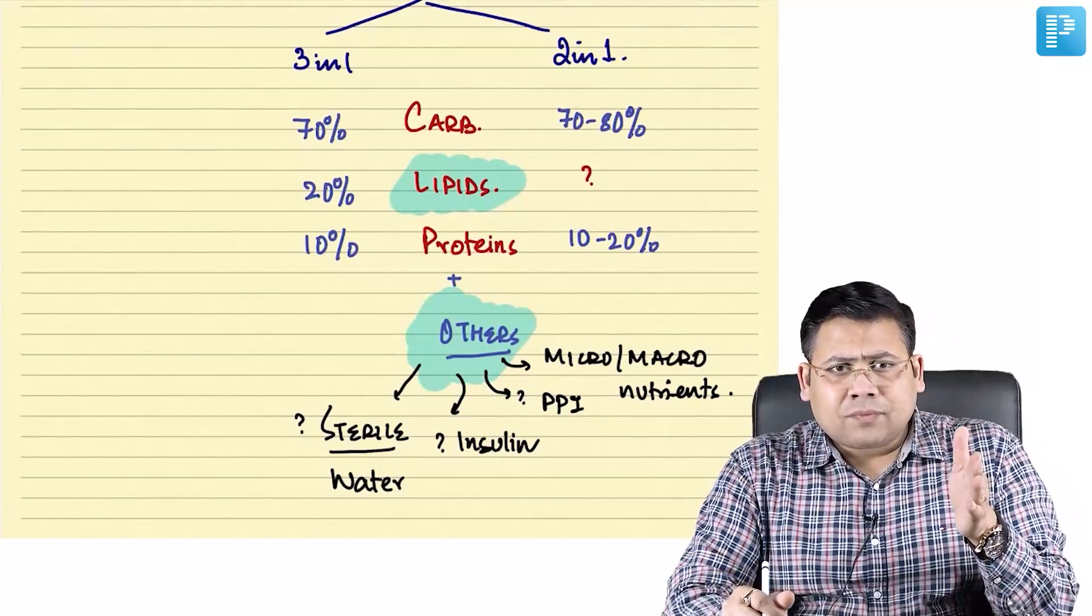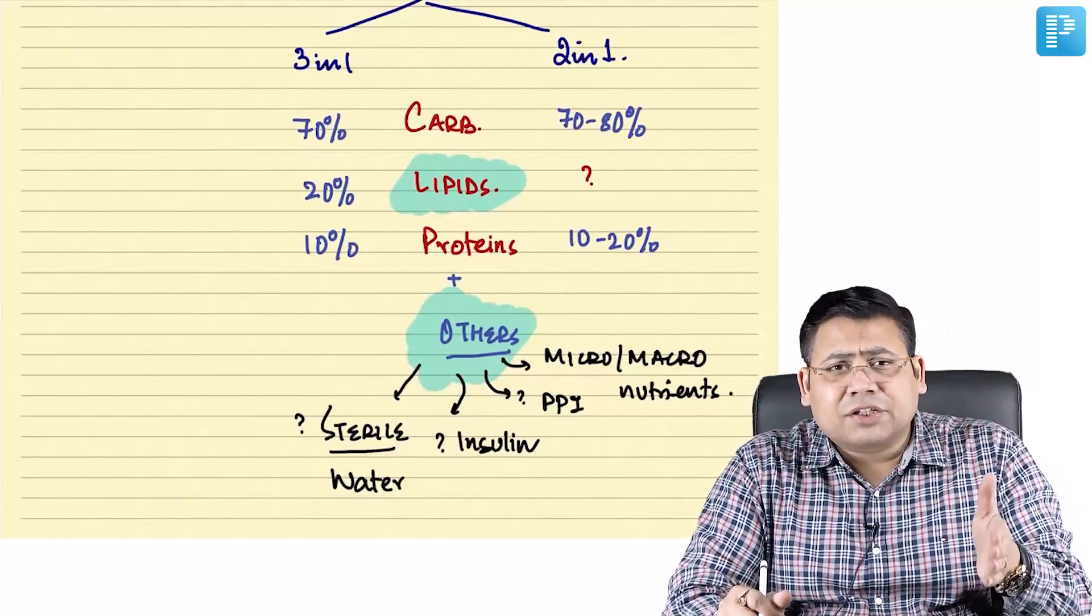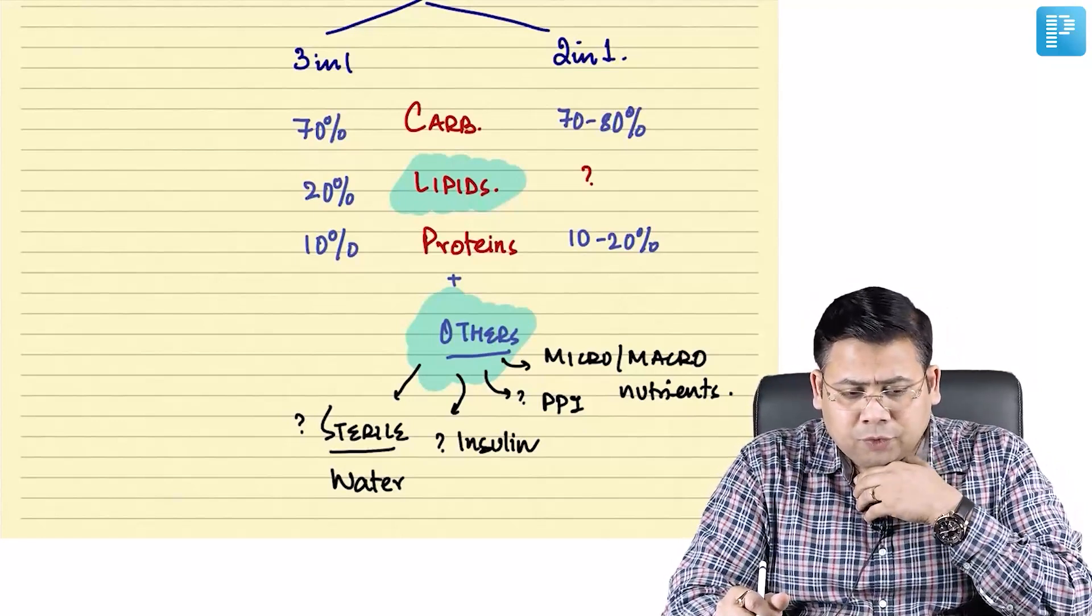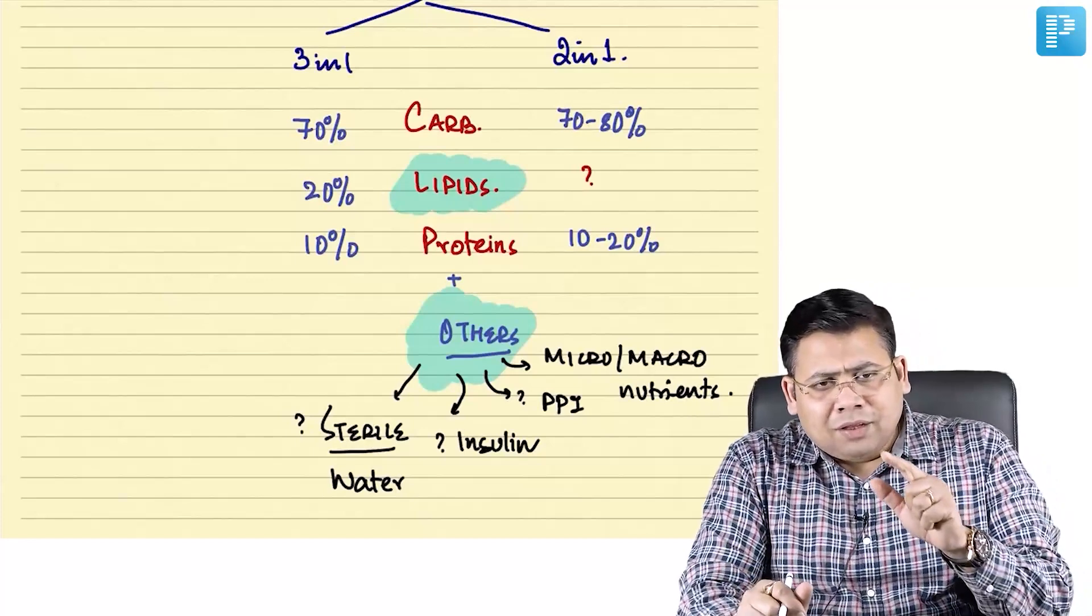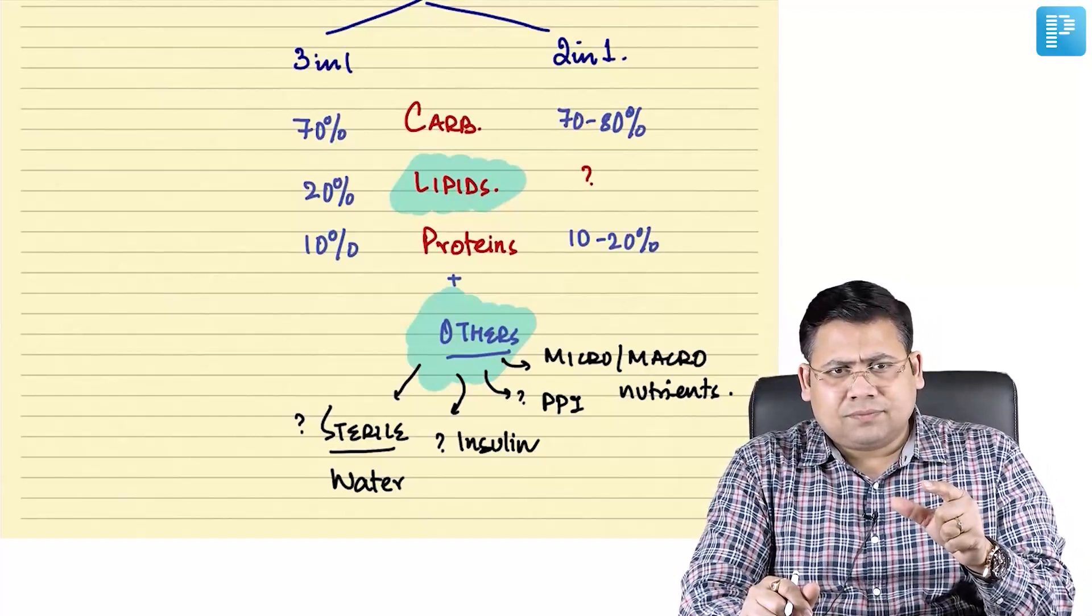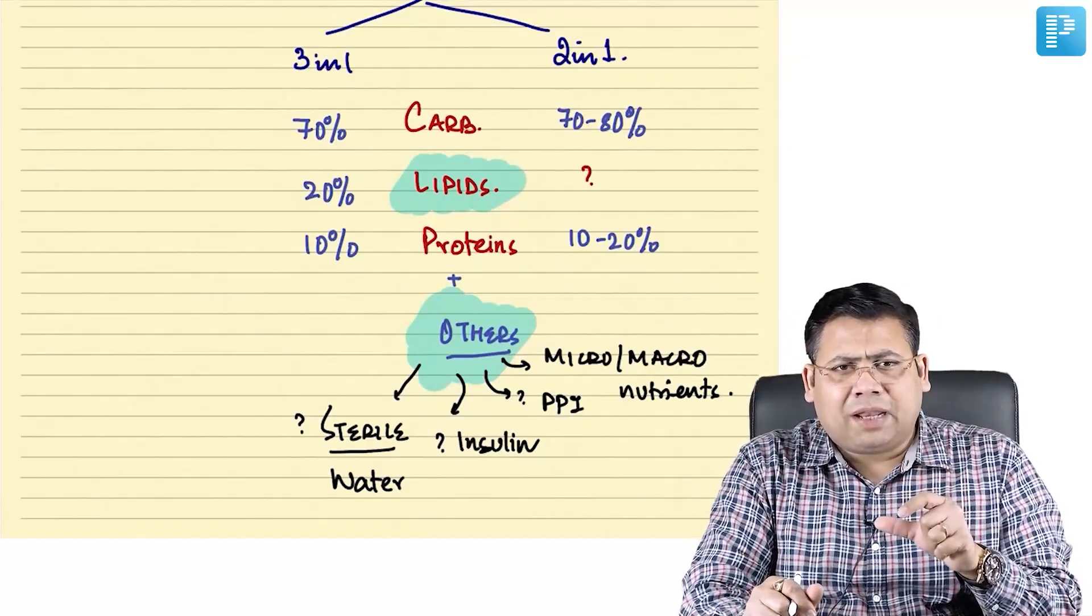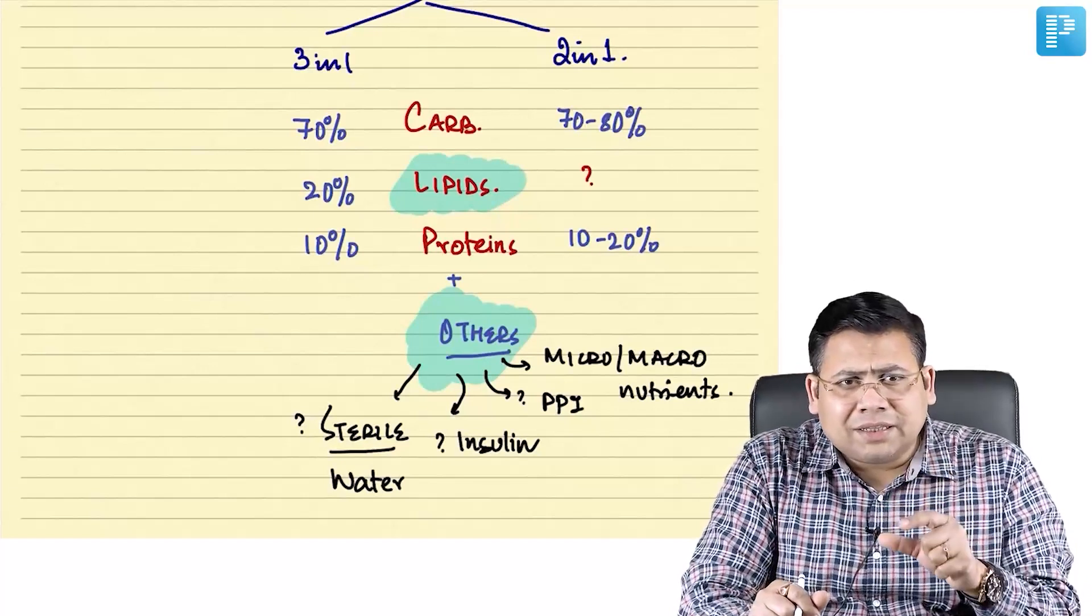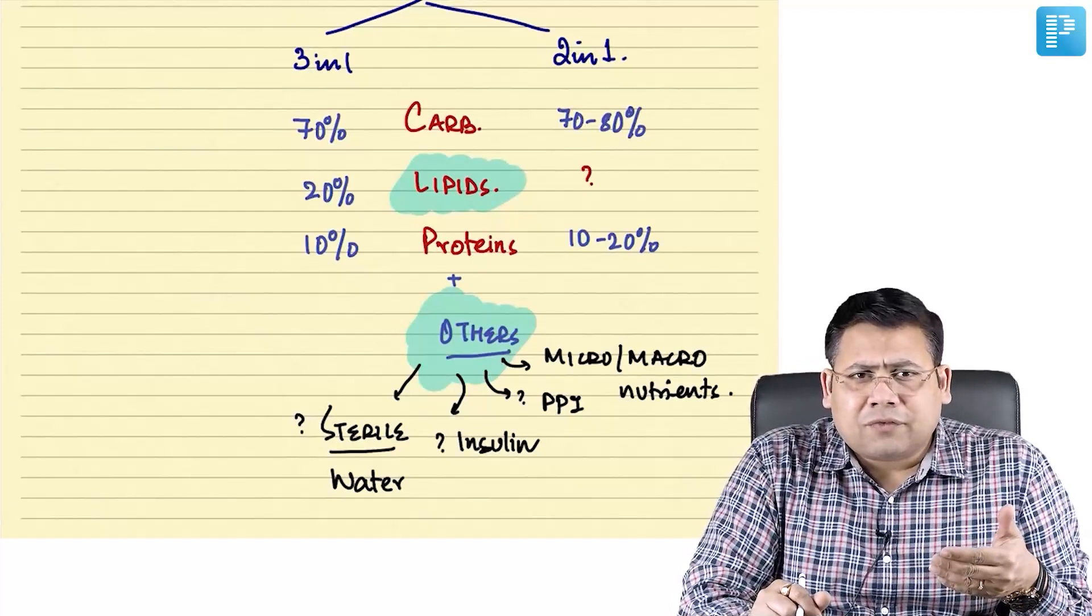In US, everything is insured basically and this world is run by a handful of rich people. Since the insurance companies are bearing the cost and since majority of the patients are not chronically malnourished, it has been seen that even if you don't add lipids, the recovery is not affected.